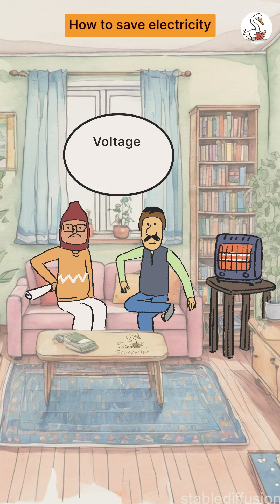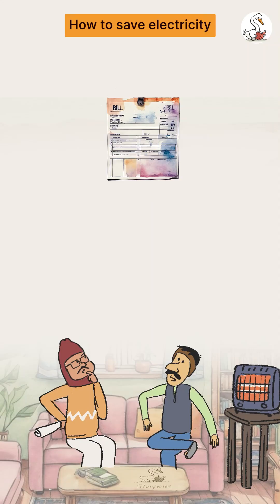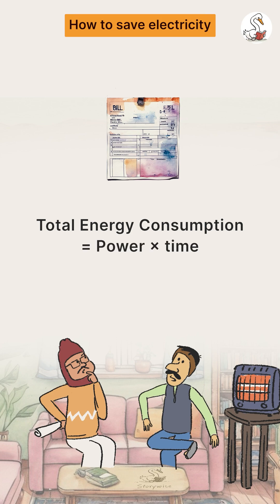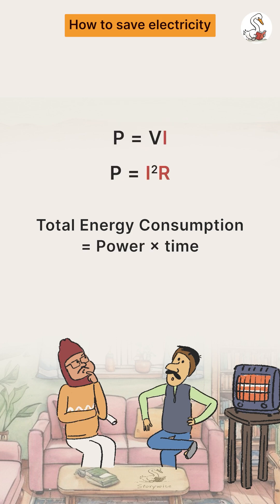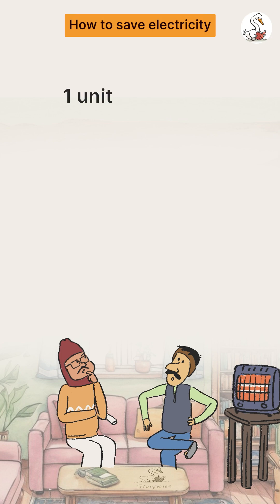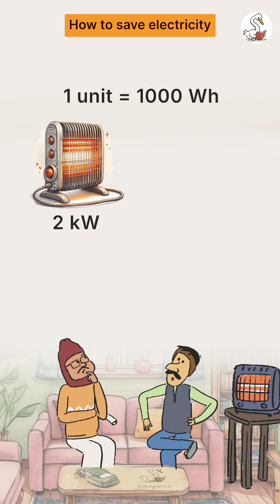Mr. Sharma explained: 'Mr. Gupta, if you want to save electricity on equipment, don't just look at the voltage — check the power rating. Electricity bill depends on total energy consumption, which is power multiplied by time. Power depends on an equipment's voltage as well as its current and resistance. One unit of electricity is equal to 1 kilowatt-hour. Mr. Gupta's heater is 2,000 watts, so in one hour it consumes 2 kilowatt-hours of energy, which means two units.'